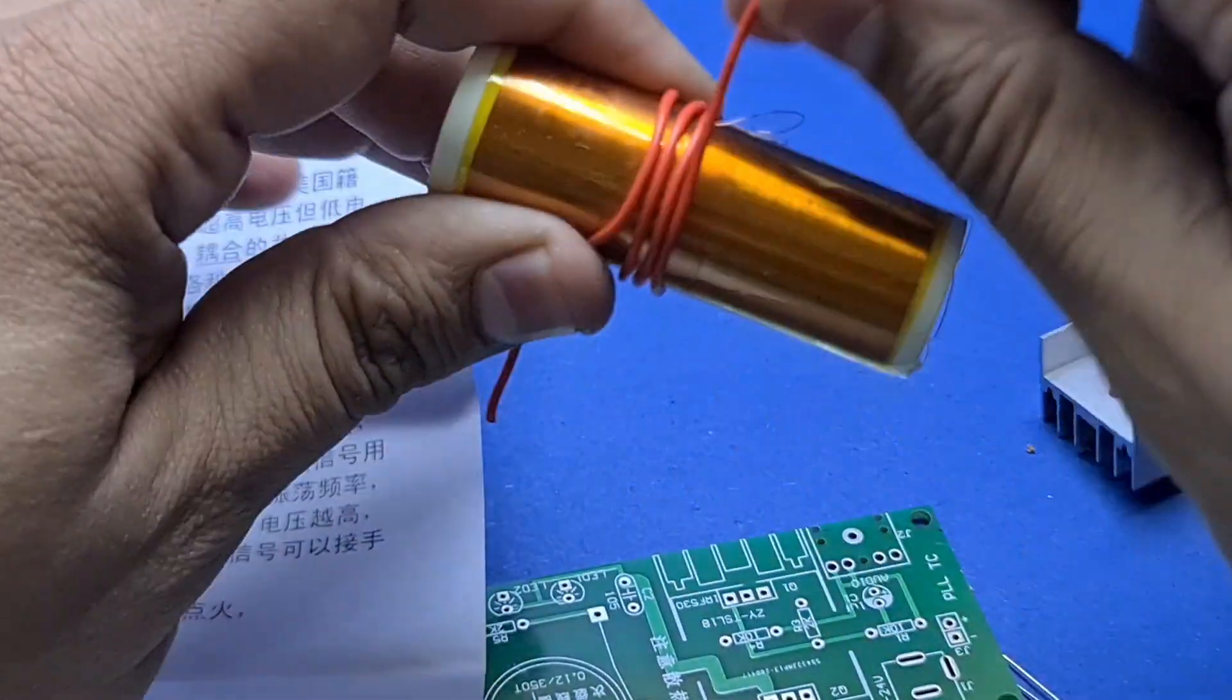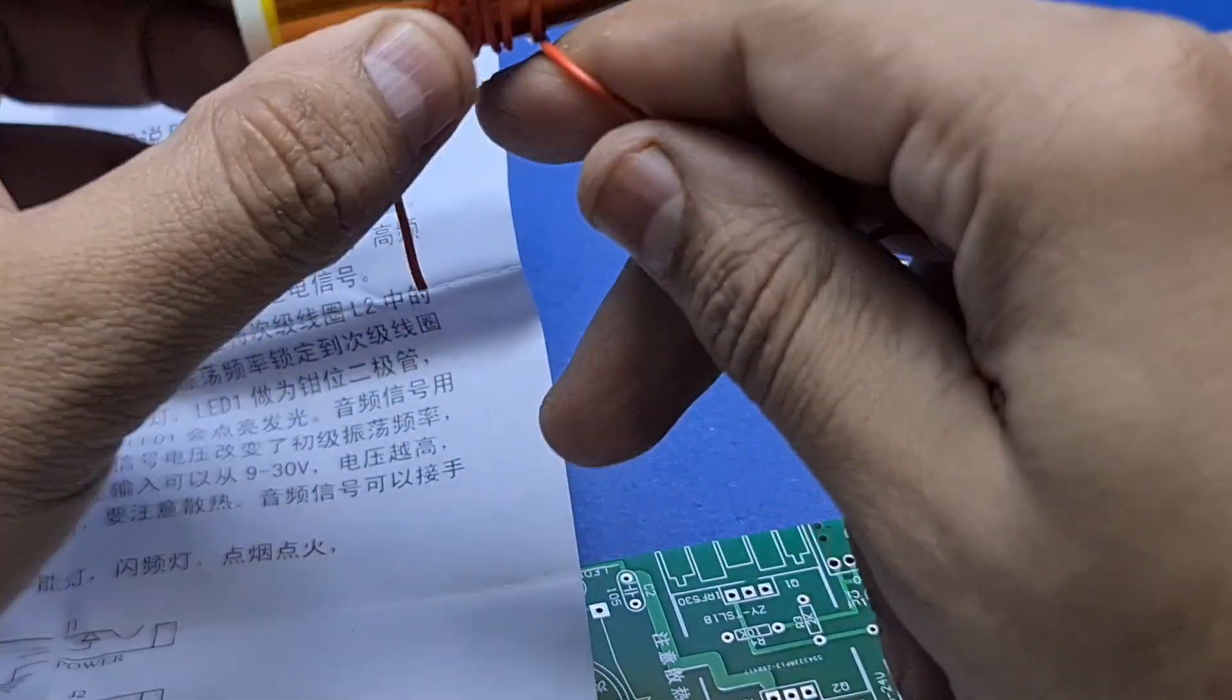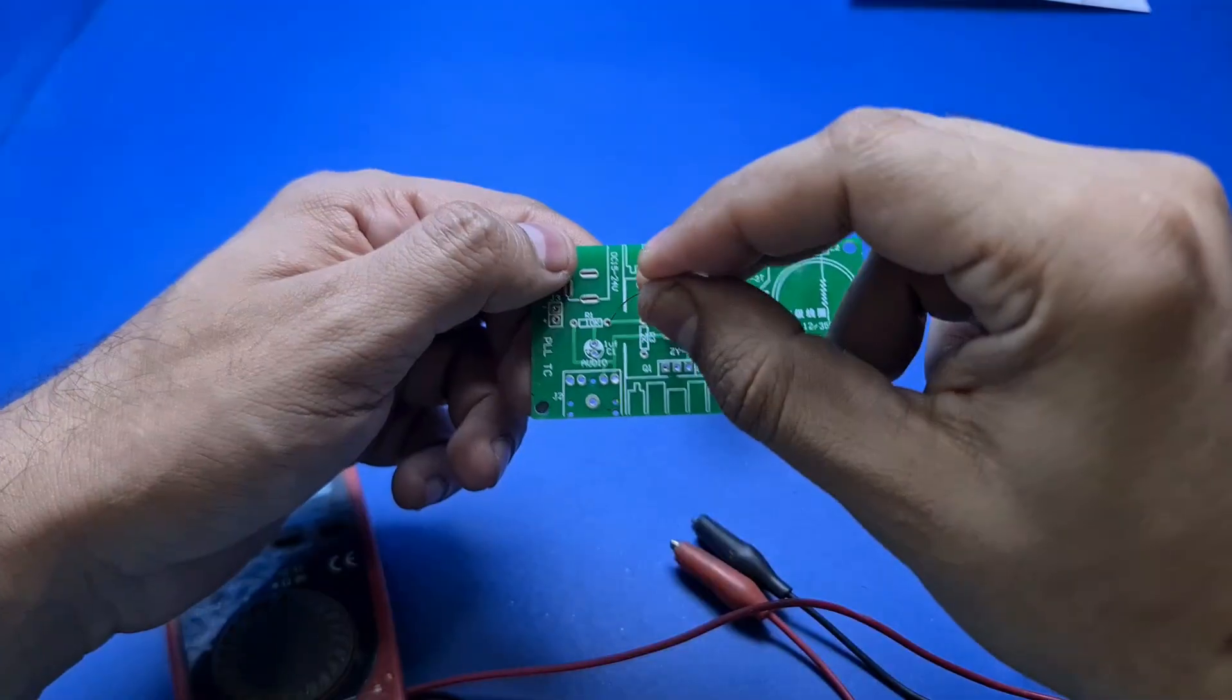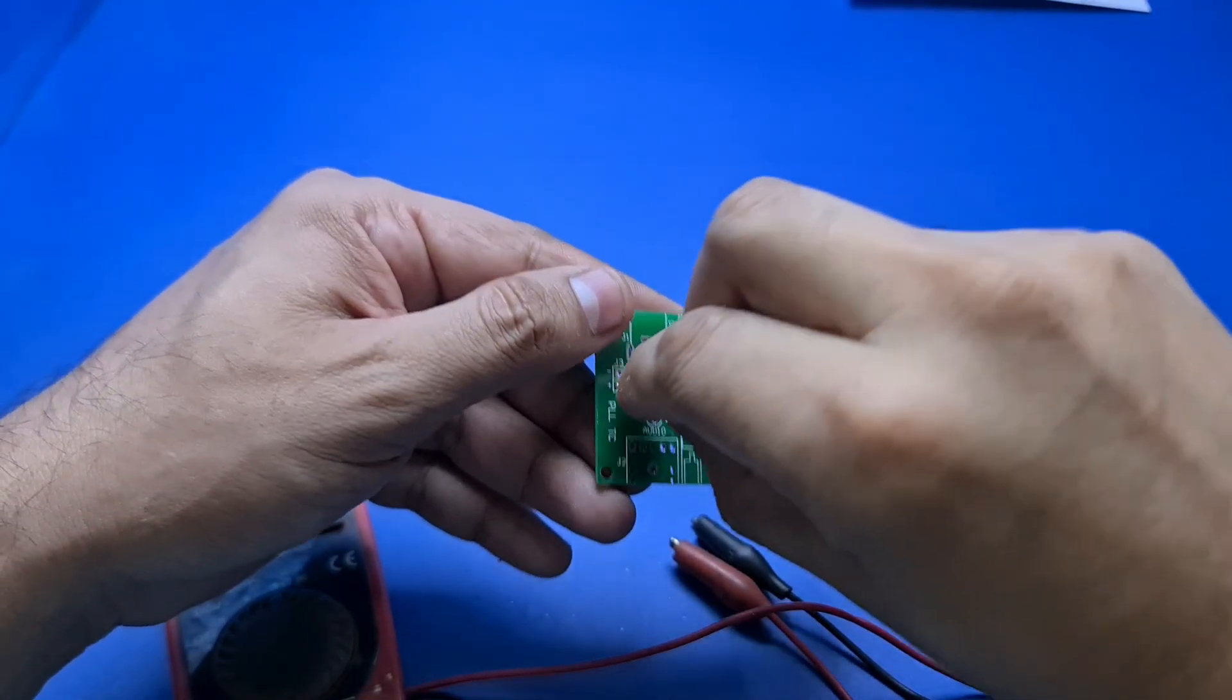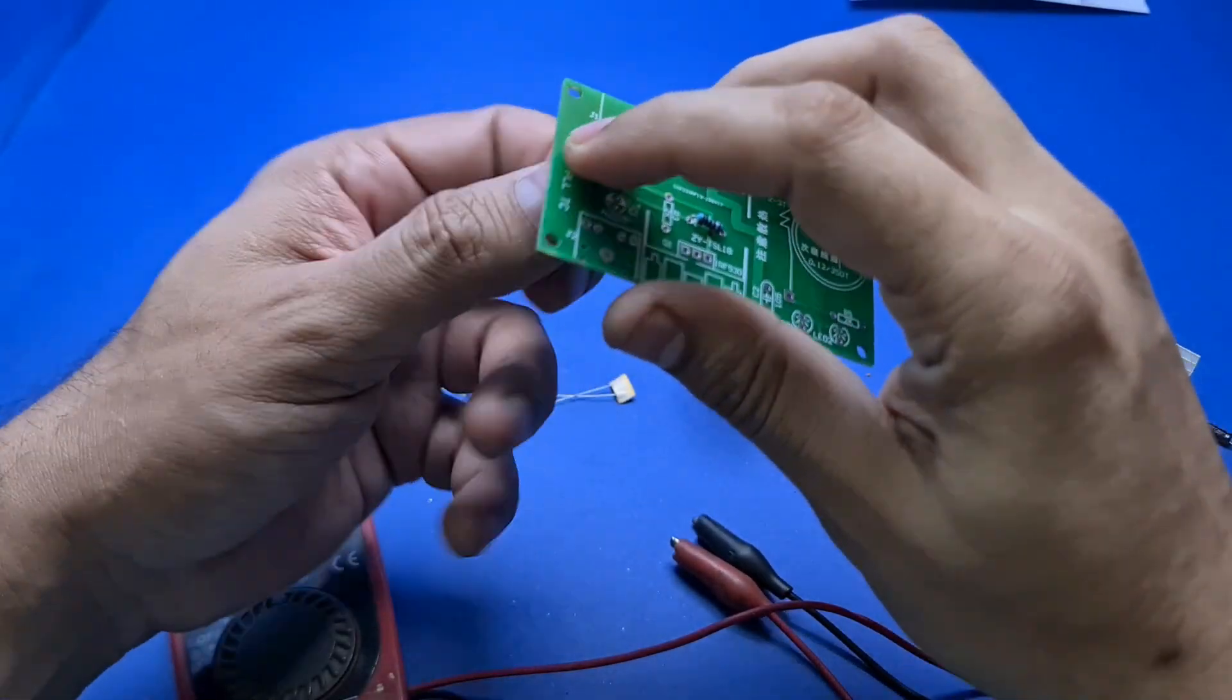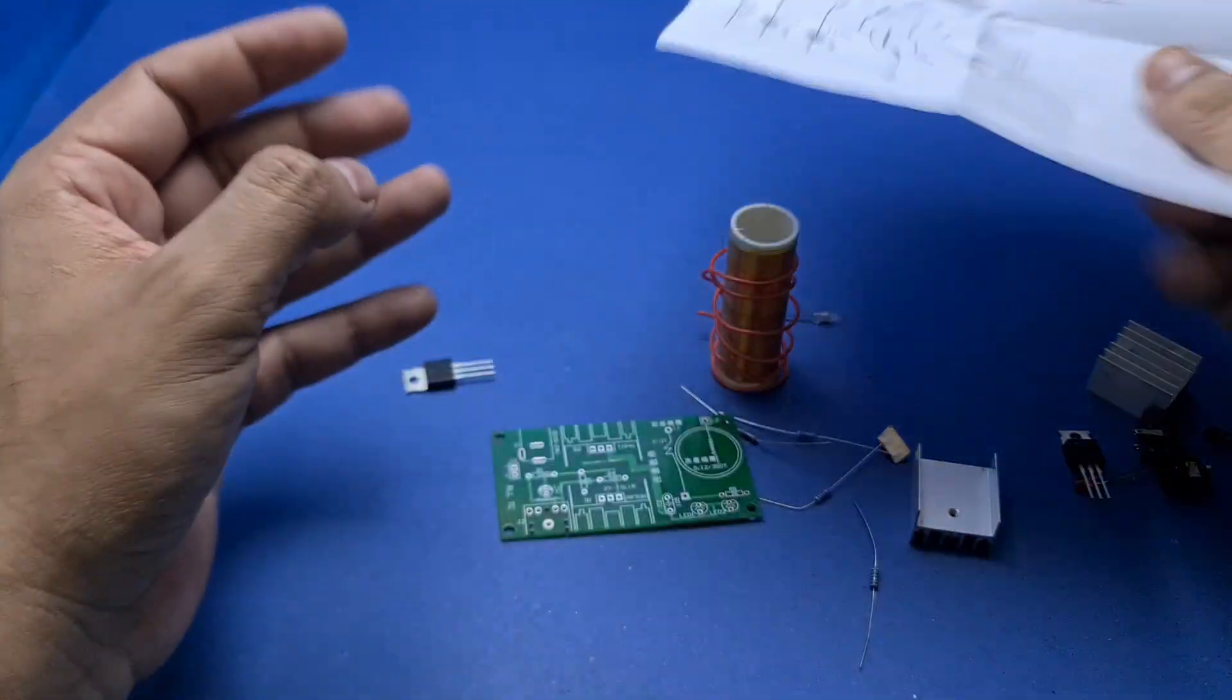I will temporarily wind all of it on the coil to avoid tangling, but we will need to wind only two to three turns in actual assembly. Once it's on the PCB, it's very easy to add components. Everything is mentioned on the PCB itself, and the whole circuit diagram is given on the back of the instruction manual.